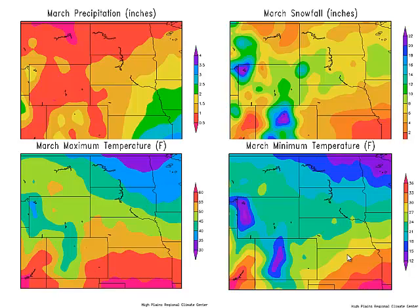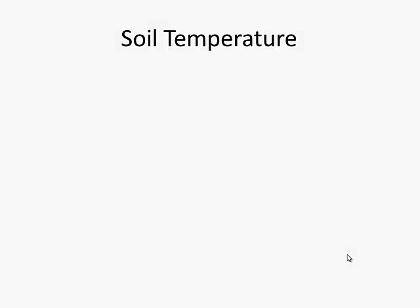In March, precipitation starts to pick back up, getting into the rainy season — inch and a half to two inches, most of it coming as rain. We do get heavy snow events with 10-to-1 ratios or even lower as far as snow-to-liquid water. Maximum temperatures get up into the 50s for daily highs, still below freezing for lows. All of this feeds into soil temperature — we know that air temperature and moisture affect what our soil temperature is going to look like.